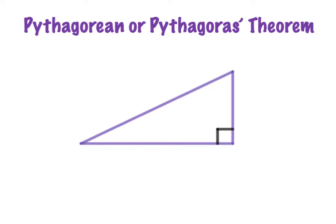The sides of the triangle that are right next to the right angle are called legs. So here we have leg A, and here we have leg B. However, when we're deciding which leg is A and which leg is B, it doesn't really matter. So for example, we could have named this side leg A and this one here leg B.